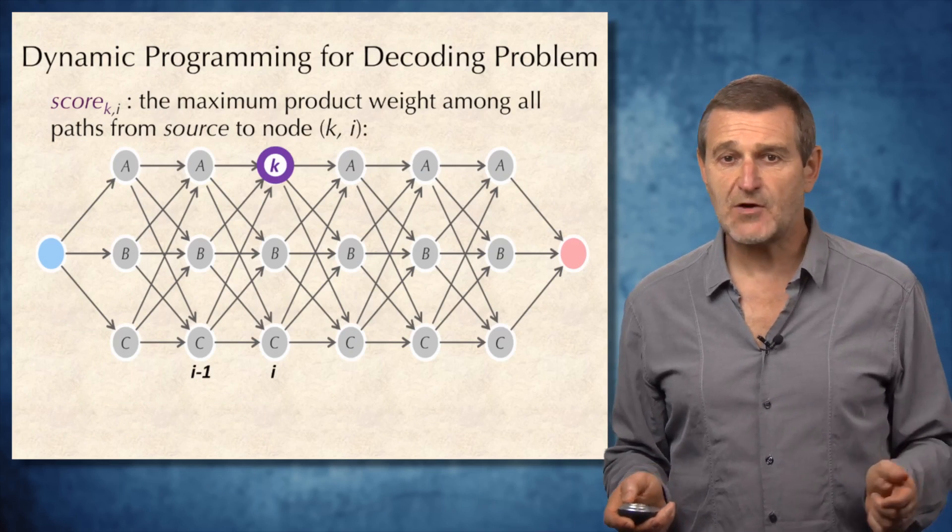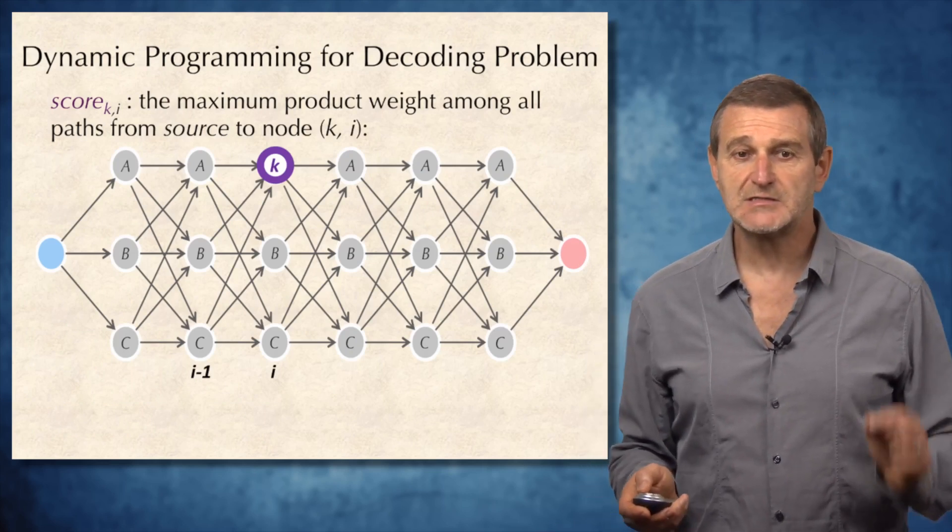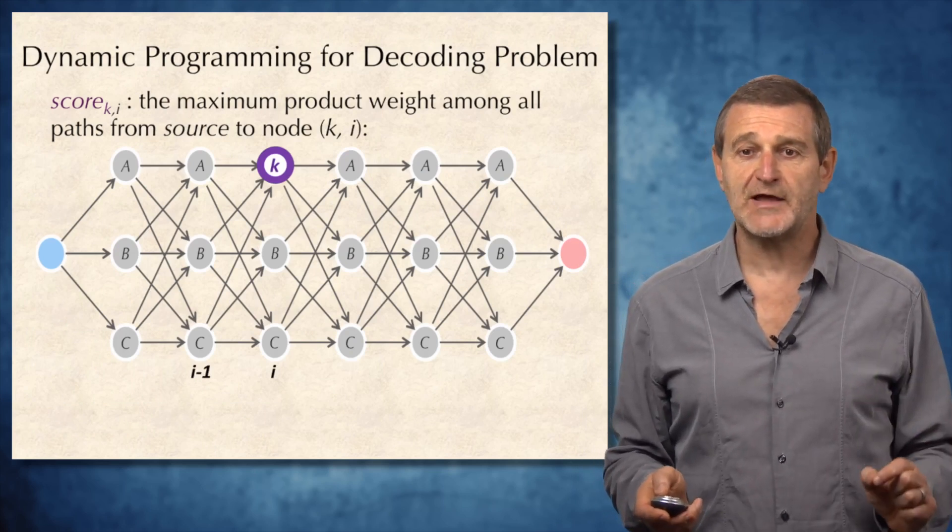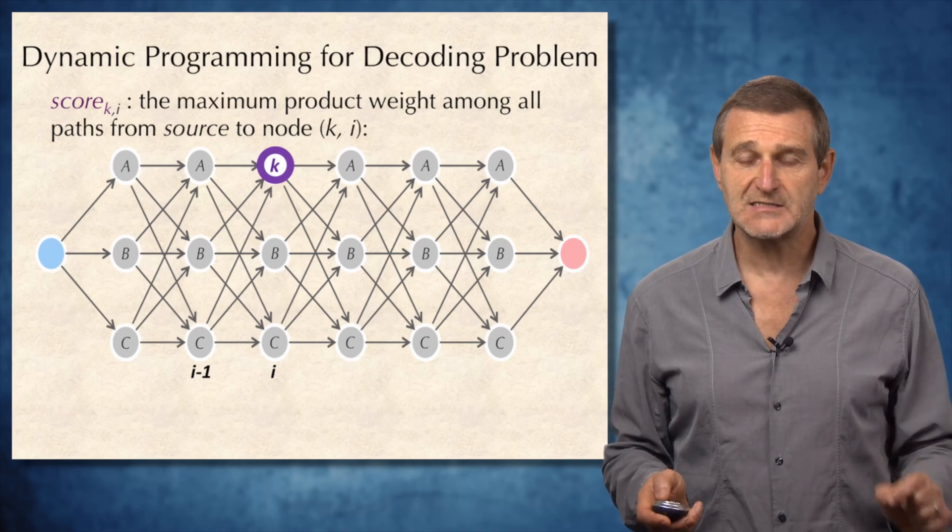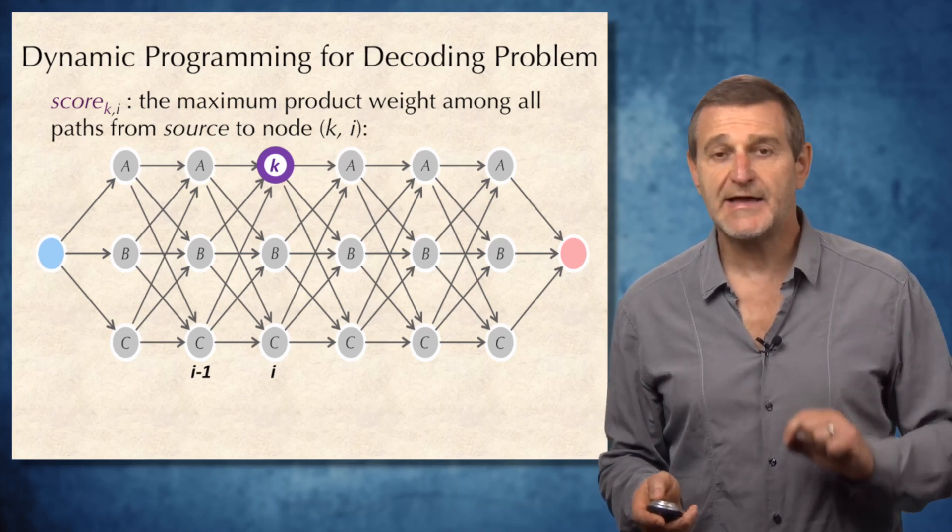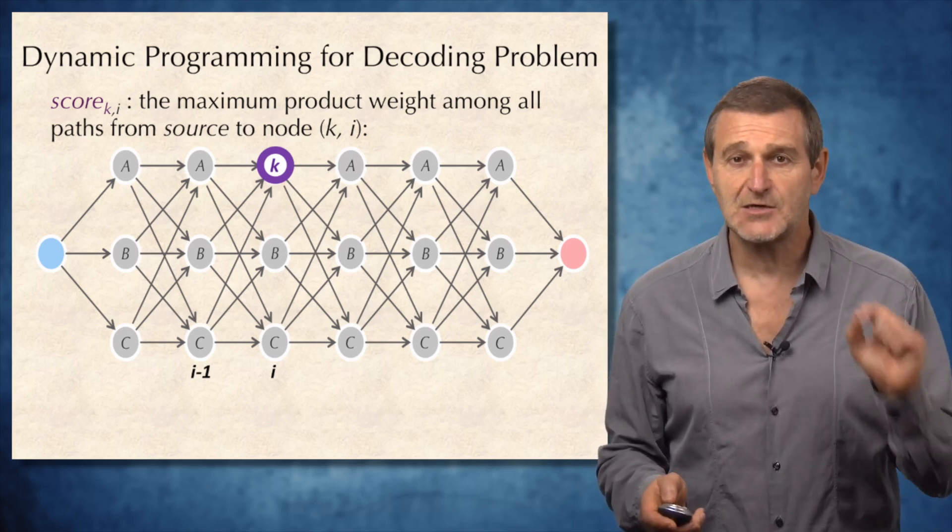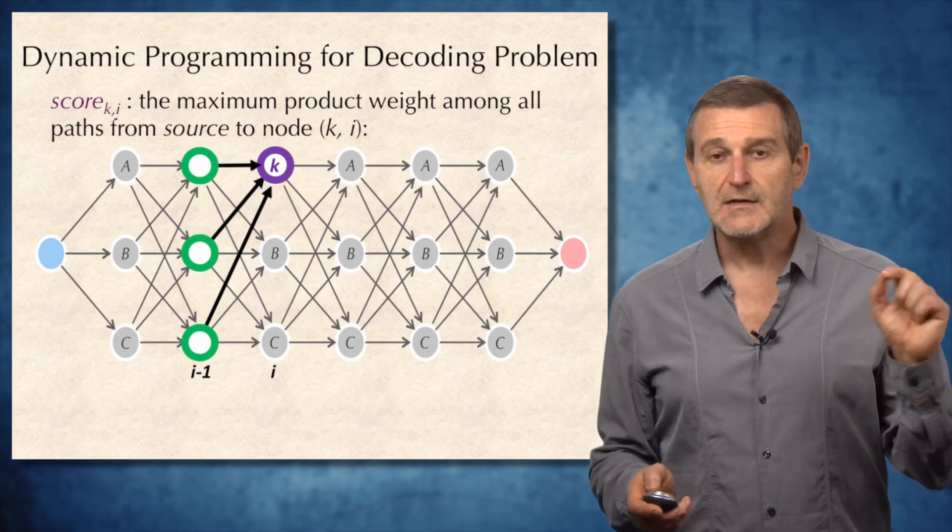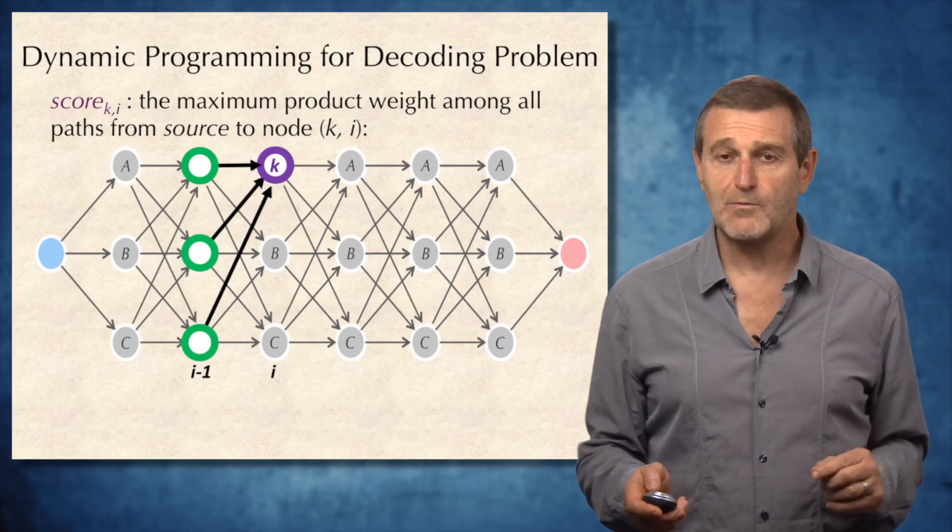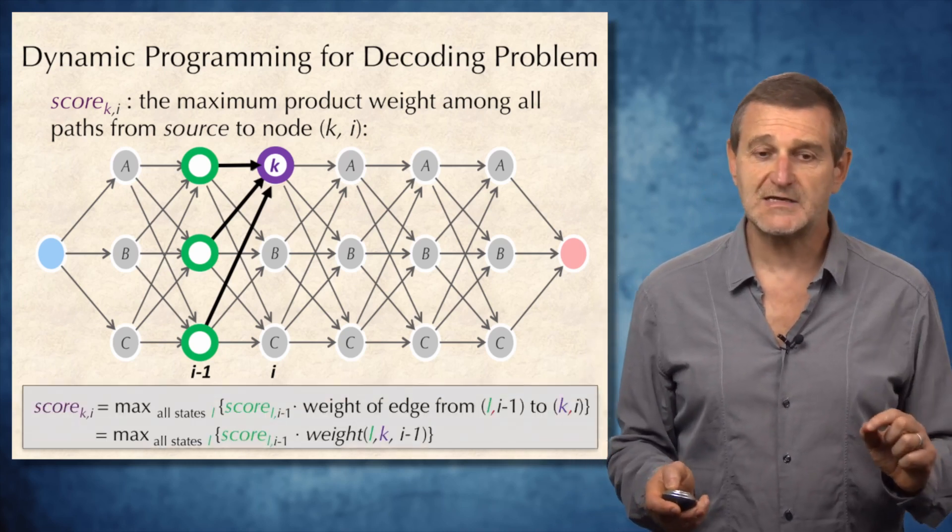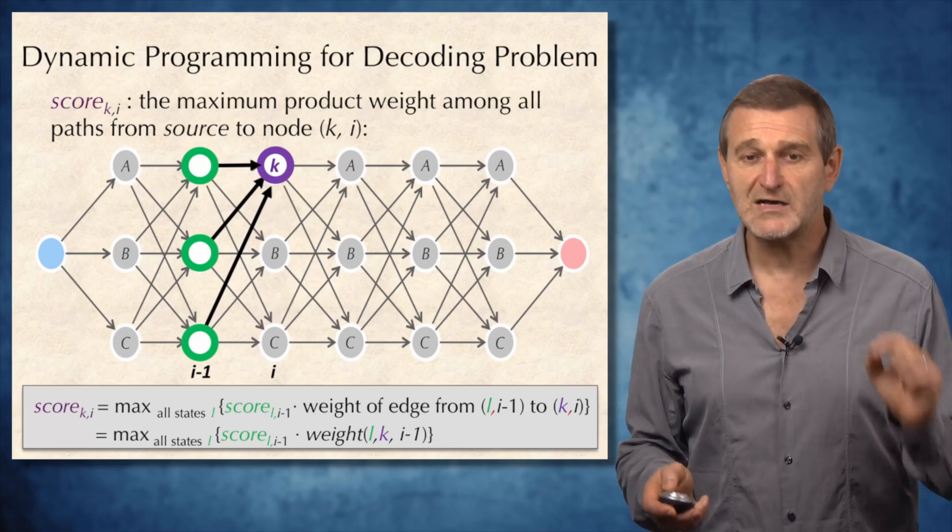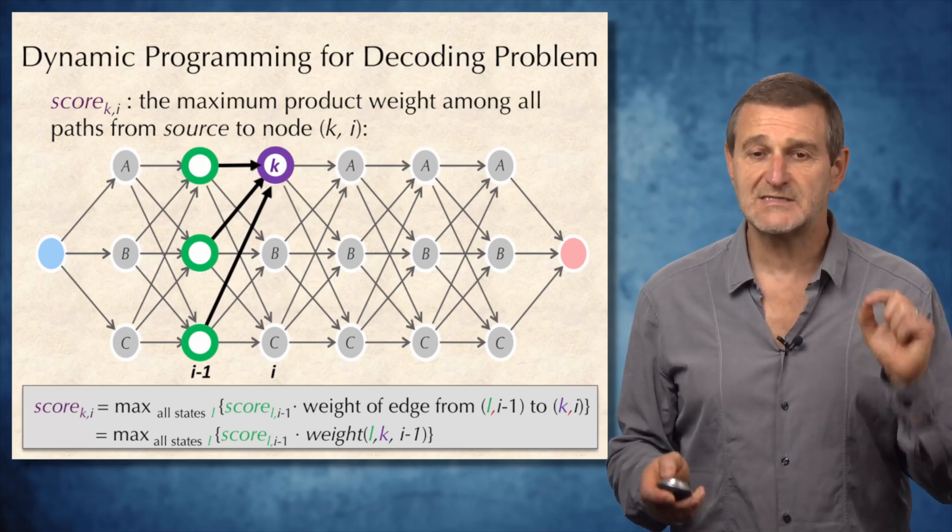To implement the dynamic programming for decoding problems, we introduce the variable score_ki, which corresponds to the maximum product weight among all paths from source to node (k,i), or the node corresponding to state k and located in the i-th column of the graph. Let's consider all predecessors of this node corresponding to all possible states. And obviously, the score at the node is equal to maximum through all possible states L.